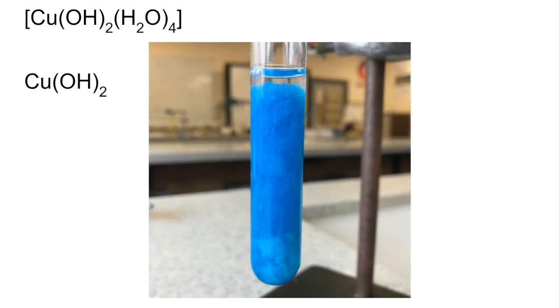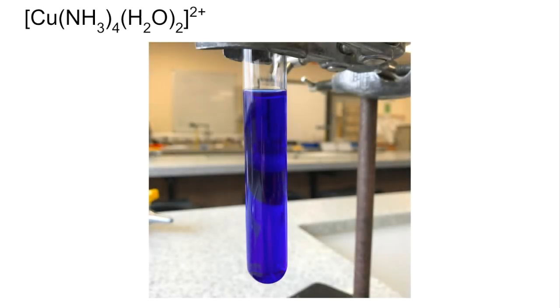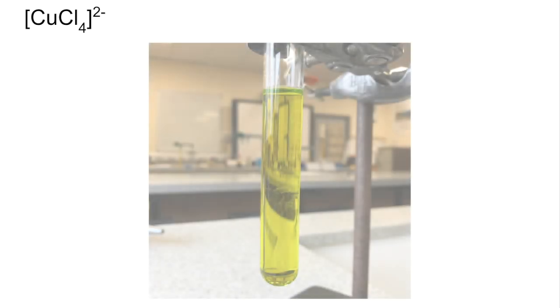Copper 2 hydroxide is a blue precipitate. The complex of copper with four ammonia ligands and two water ligands is a deep blue solution, and the copper complex with four chloride ligands, 2- charge, is a yellow solution.